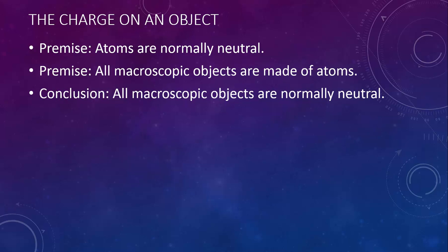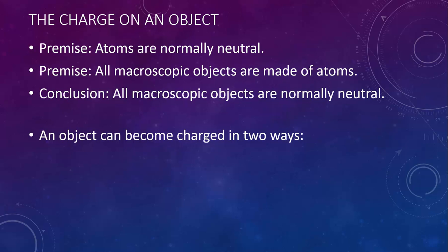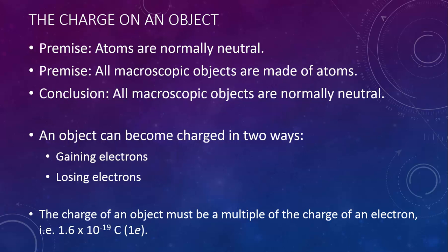The universe would be a pretty boring place if everything was always neutral, however. Objects can become charged, and there are two fundamental ways this can happen: an object can gain electrons to become negatively charged, or it can lose electrons to become positively charged. There is no other way — atoms cannot gain or lose protons. Since the charge on an object depends on how many electrons it gained or lost, the charge must be a multiple of 1.6 times 10 to the negative 19 coulombs.